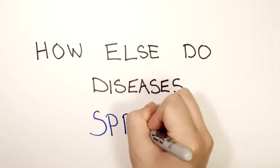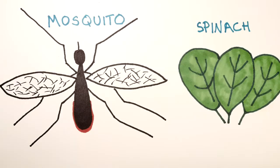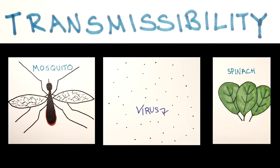Can you think of other ways diseases spread? What about malaria or E. coli? The way a disease spreads is a big part of its transmissibility.